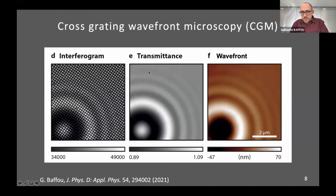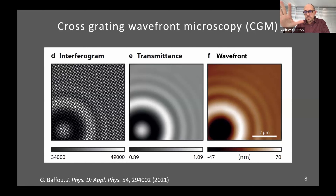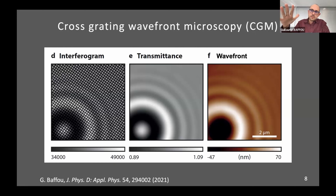The information of the transmittance image is contained within the intensity of the spots. The information on the wavefront is contained within the positions of the spots. When the wavefront gets distorted on the camera, these dots slightly move — it's like a shadow effect. From this motion of the spots, we can reconstruct the wavefront gradients, which we integrate to get the wavefront.